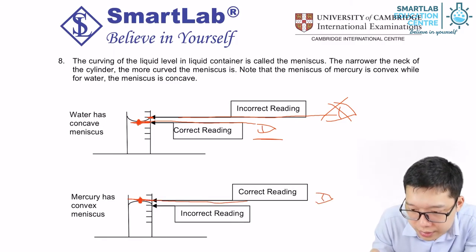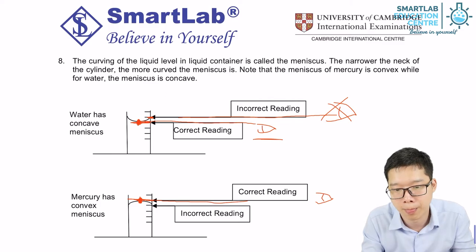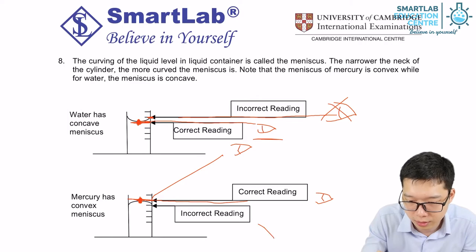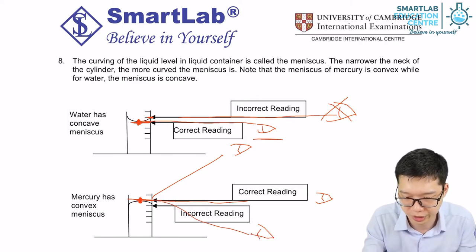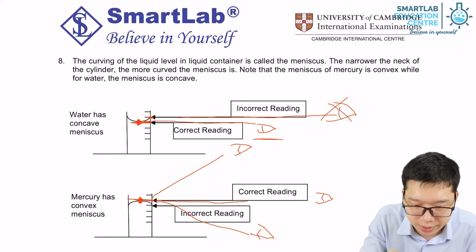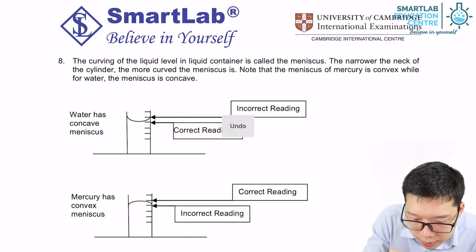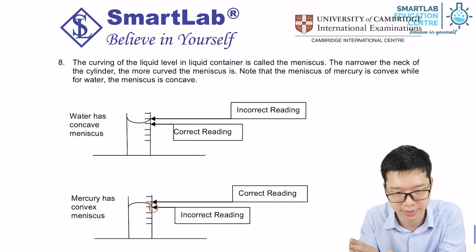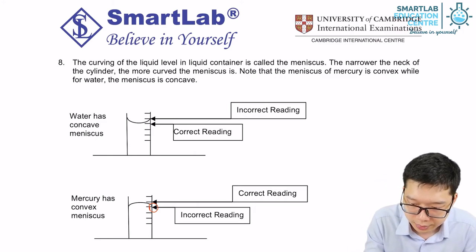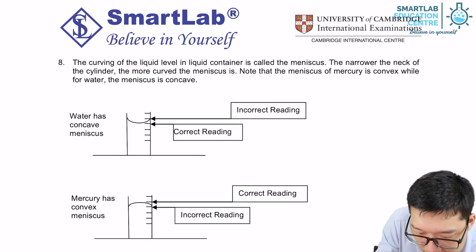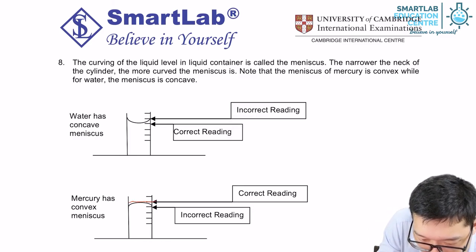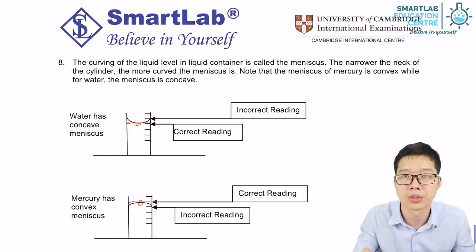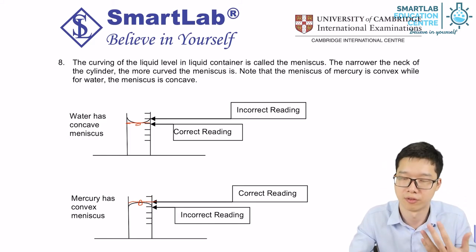Our eye position should be perpendicular — it cannot be angled from top to bottom or bottom to top. We cannot read the contact point of the liquid and the measuring cylinder. Instead, we must read the top of a convex or the bottom of a concave. That's how we use the measuring cylinder to measure the volume of liquids.